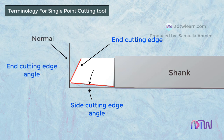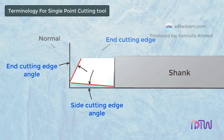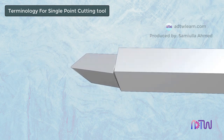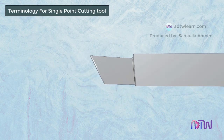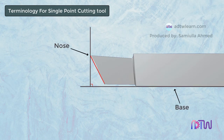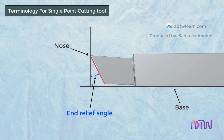The angle made by the end cutting edge with the normal to the shank is called the end cutting edge angle. The angle immediately below the nose of the tool and the line perpendicular to the base of the tool is called the end relief angle. The purpose of this angle is to avoid any drag of the tool on the job and also to prevent rubbing of the tool on the surface which is already cut.